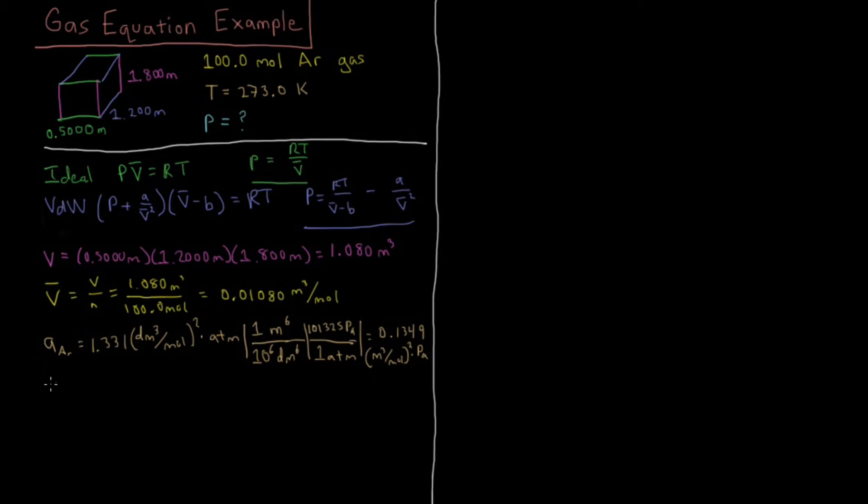For parameter B, the molar volume or size of the argon molecules, we get 0.3183, and that unit is a volume, so it's given as decimeters cubed per mole. Remember that a decimeter cubed is a liter.